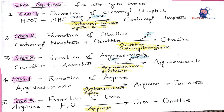The second step is the formation of citrulline. Carbamoyl phosphate combines with ornithine to form citrulline. This reaction takes place in the matrix of the mitochondria. The enzyme involved is ornithine carbamoyl transferase, and inorganic phosphate is released as a byproduct.